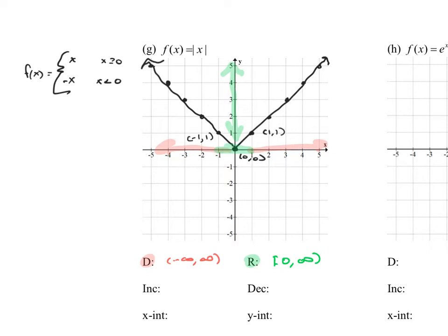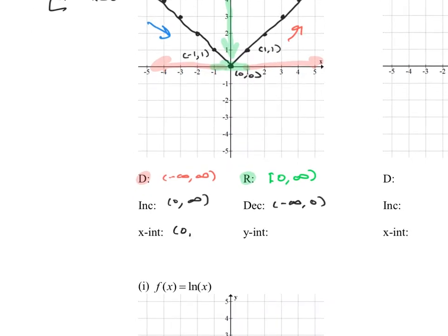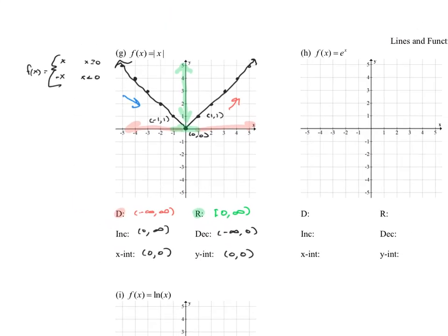As I go from left to right, at first I'm going down, then I'm going up after 0. Remember, increasing and decreasing refer to x values. This graph is going down from negative infinity to 0 — so it's decreasing from negative infinity to 0, using parentheses on both. This graph is going up from 0 all the way to the right, so the interval of increasing is 0 to infinity. The x-intercept and y-intercept are both at the point 0, 0. That's the graph and analysis of absolute value of x.